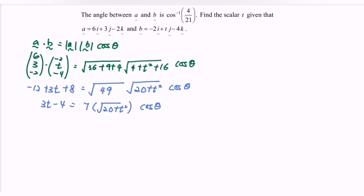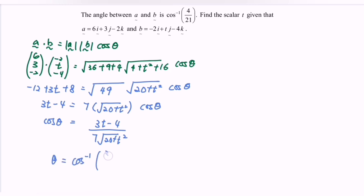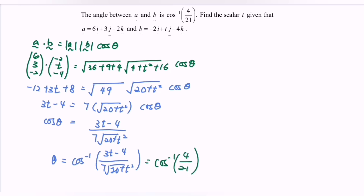Rearranging to make cos θ the subject: cos θ = (3t − 4) / (7√(20 + t²)). Therefore, θ = arccos[(3t − 4) / (7√(20 + t²))]. Referring back to the question, θ = arccos(4/21). Comparing the two expressions: (3t − 4) / (7√(20 + t²)) = 4/21.